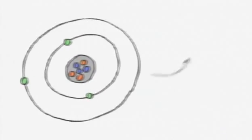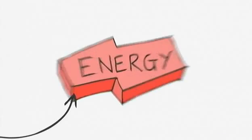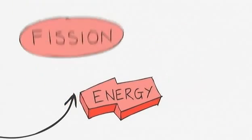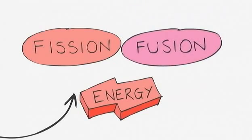Atoms are very small, but there are two ways we can get enormous amounts of energy out of them. These are nuclear fission and nuclear fusion.